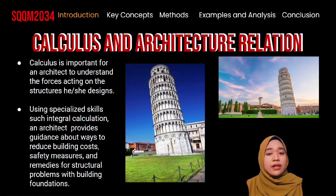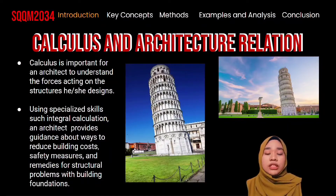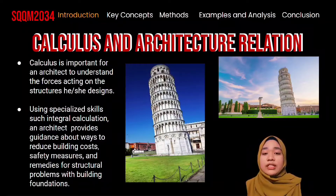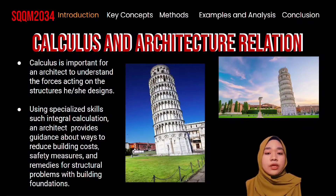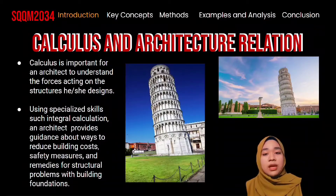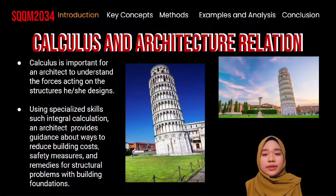Calculus and architecture are closely related. Calculus is important for an architect to understand the forces acting on the structures they design. Using specialized skills such as integral calculus, an architect can provide guidance on ways to reduce building costs, safety measures, and remedies for structural problems with building foundations. Like the picture shown in the slide, this is the Leaning Tower of Pisa, a well-known example of a design plan gone wrong. The building was originally intended to stand upright, but the weight was not accounted for, and early in its construction it began leaning over, as soil and decay caused the structure to sink and tilt.